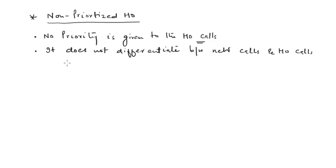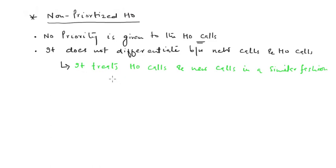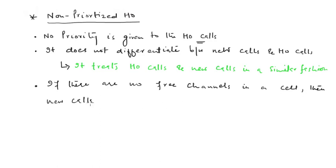This mechanism treats handoff calls and new calls in a similar fashion. No priority is given to the handoff calls — both handoff calls and new call requests are treated similarly. Further, if there is no channel available in the cell, the new call request or the handoff request will be blocked. As long as a channel is available in the cell, only then new calls or handoff calls will be considered.